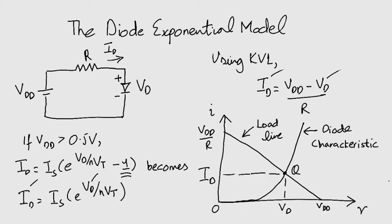In graphical analysis, both equations are plotted on the same IV graph. You can see that on your bottom right. The diode characteristic is an exponential curve as expected, while the equation obtained by KVL is a straight line.